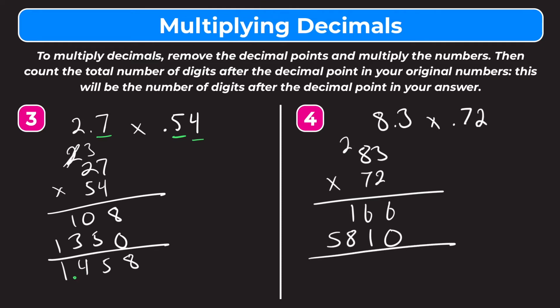Now let's add down: 6 plus 0 is 6, 6 plus 1 is 7, 1 plus 8 is 9, and the 5. Now let's count the digits to the right of the decimal in our original numbers. We have 1 in 8 and 3 tenths and 2 in 72 hundredths, giving us a total of 3. So we have to have 3 digits to the right of the decimal in our answer, meaning the decimal point goes between the 5 and the 9, making our final answer 5 and 976 thousandths.